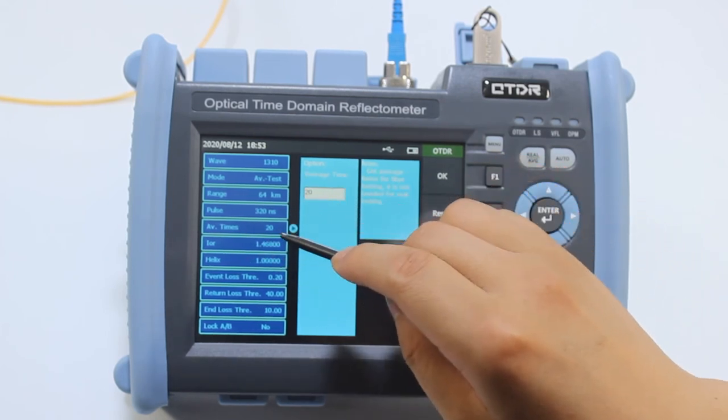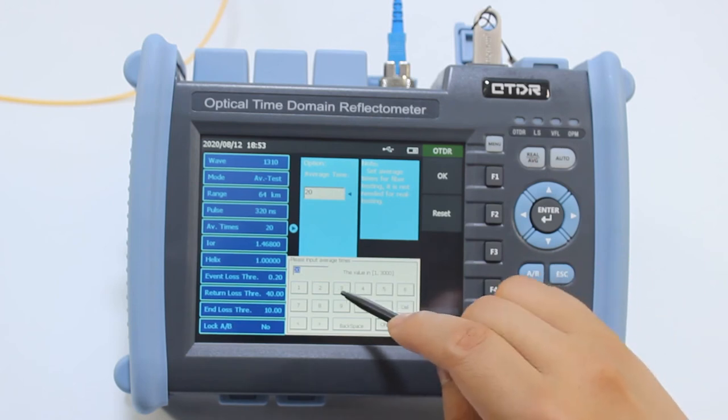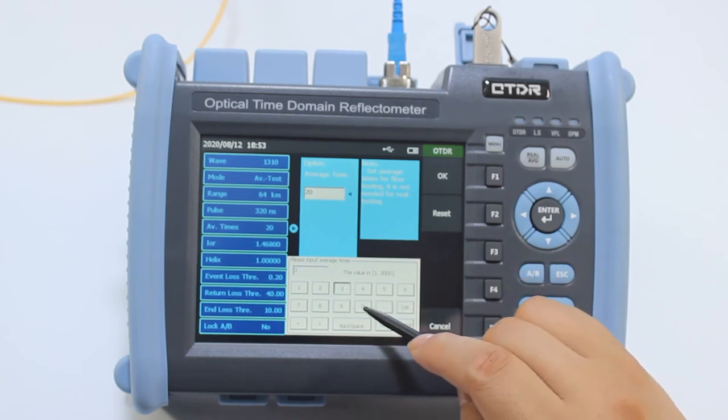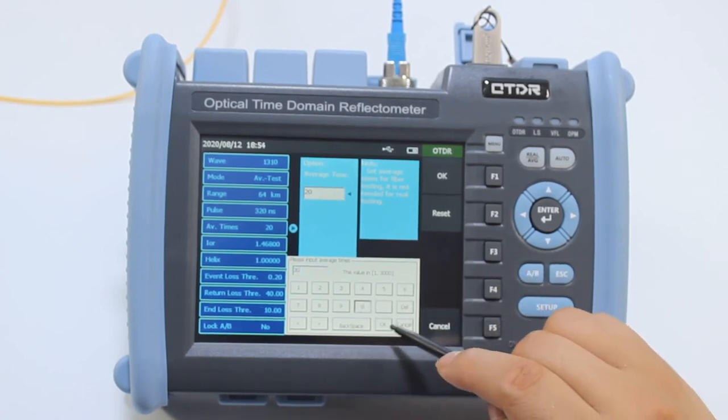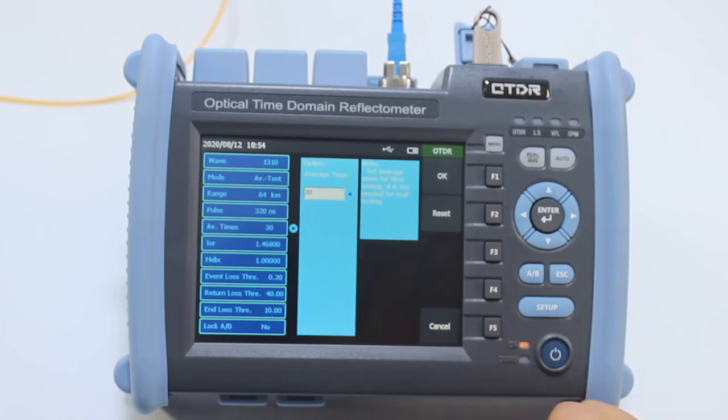Averaging time. For example, 30 seconds. Click OK to enter the value.